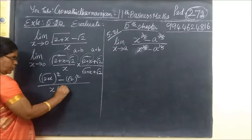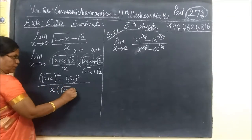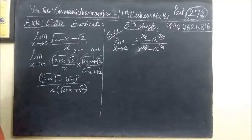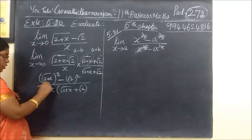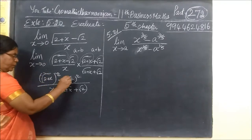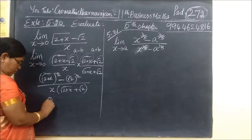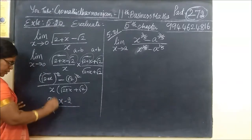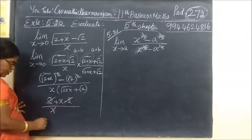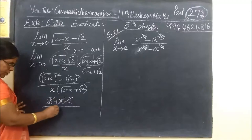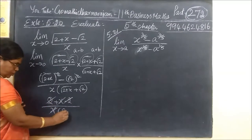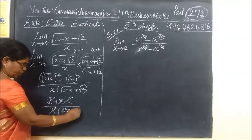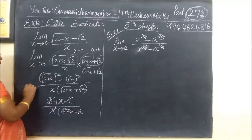The formula is A² minus B², divided by the denominator. So we get root(2+x) plus root(2) in the denominator. Then 2 plus x minus 2, divided by x — the x terms cancel. So we are left with 1 divided by root(2+x) plus root(2).